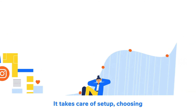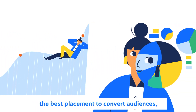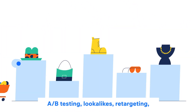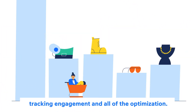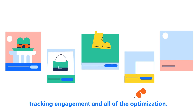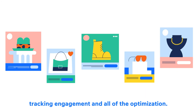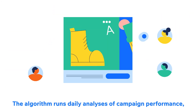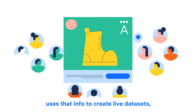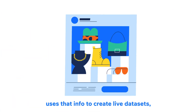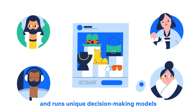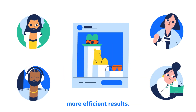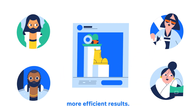It takes care of setup, choosing the best placement to convert audiences, A/B testing, lookalikes, retargeting, tracking engagement, and all of the optimization. The algorithm runs daily analyses of campaign performance, uses that info to create live datasets, and runs unique decision-making models and trend analyses to get you more efficient results.